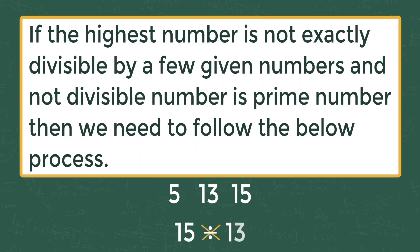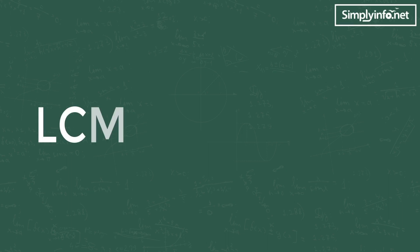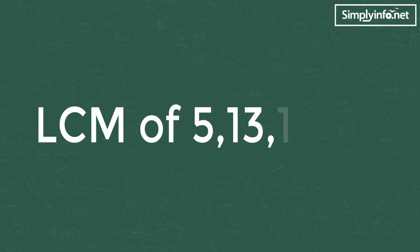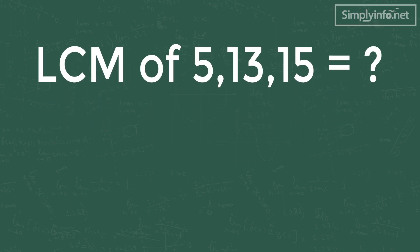Trick 3: if the highest number is not exactly divisible by a few given numbers, and the non-divisible number is a prime number, then we need to follow the below process. Let's solve the third problem: LCM of 5, 13, 15 is equal to what?